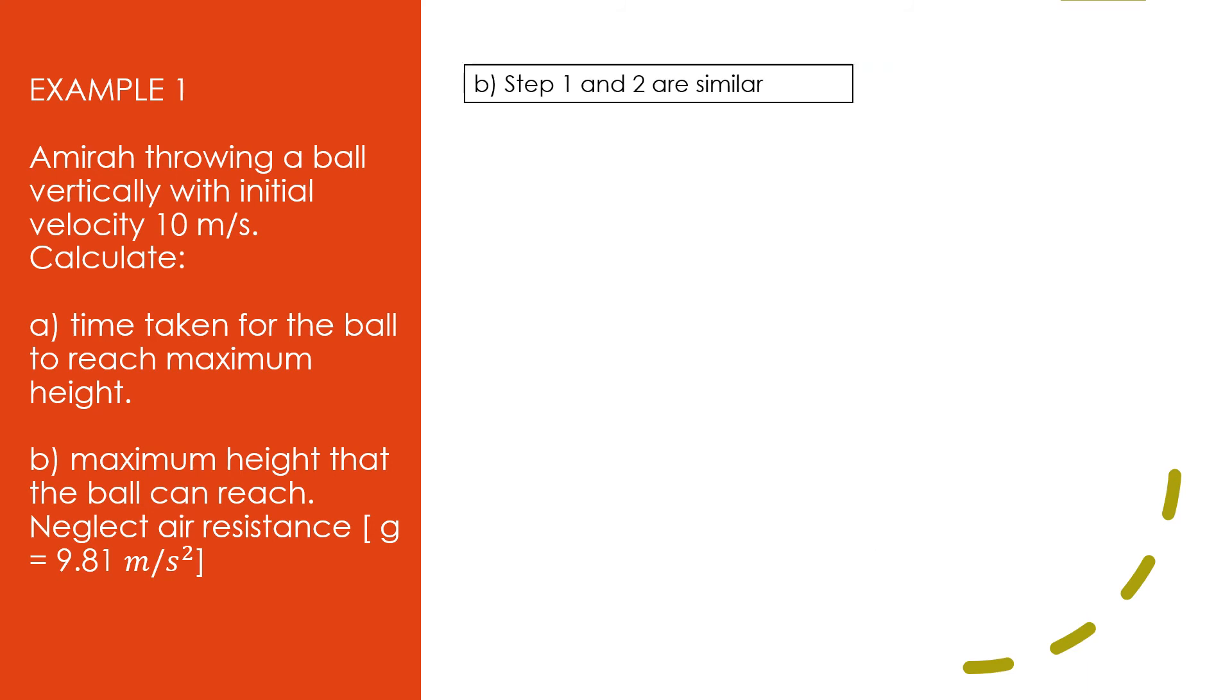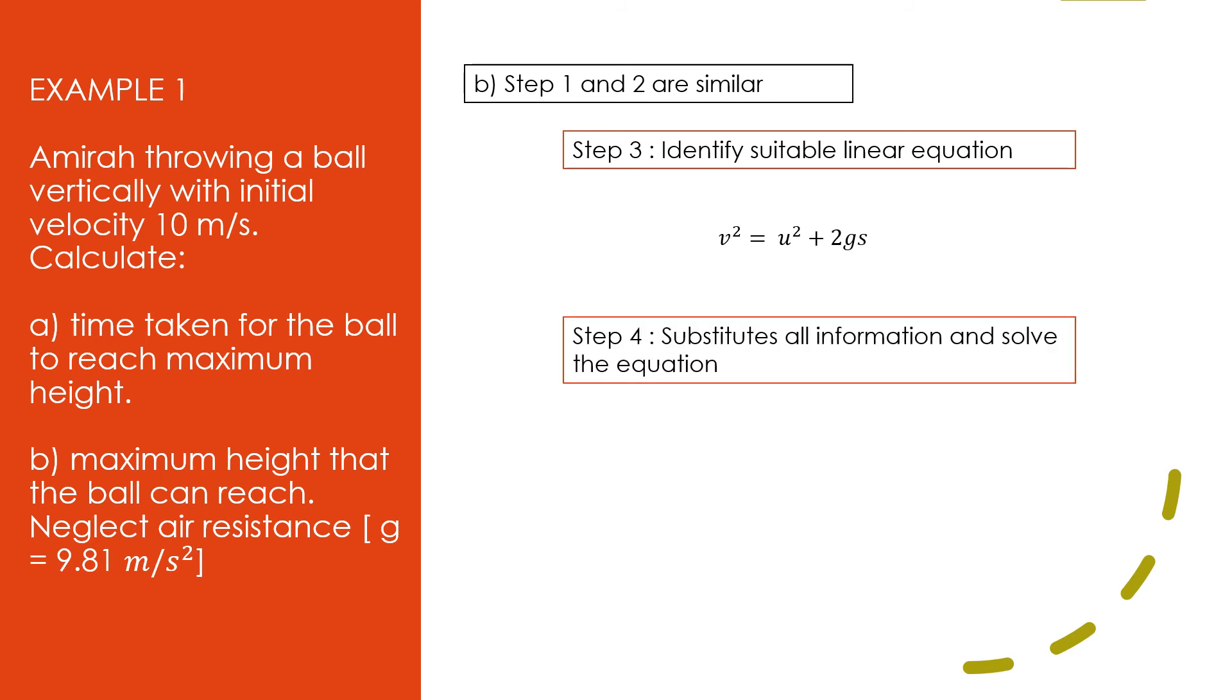For question B, step 1 and 2 are similar. So, we use the same free body diagram we drew earlier. So, we jump to step 3, identify suitable linear equation. Because we want to find maximum height, we will choose v² = u² + 2gs. Last step, substitute all information and solve the equation. So, substitute all the information in the linear equation. And solve for the linear equation. And we get the answer. Maximum height equals 5.10 m.